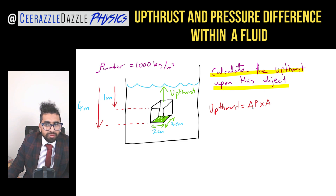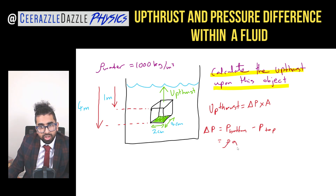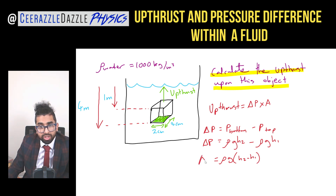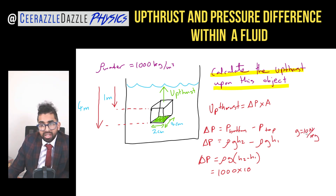Let's find the pressure difference. The change in pressure between the top and bottom is the pressure at the bottom, rho g h2, minus the pressure at the top, rho g h1. Grouping like terms: density times gravity times (h2 minus h1). The density is 1000, g is 10 newtons per kilogram, h2 is 4 and h1 is 1, so 4 minus 1 equals 3.